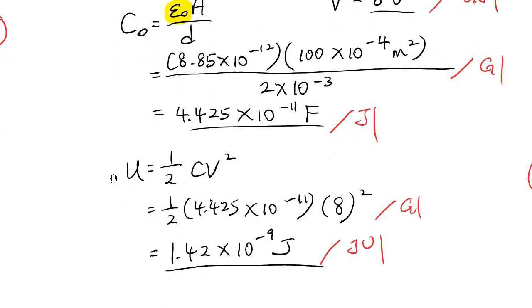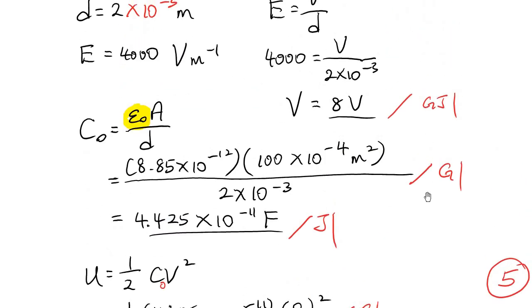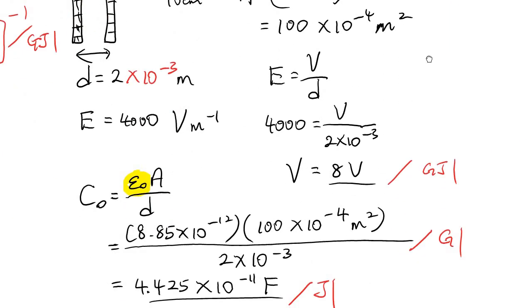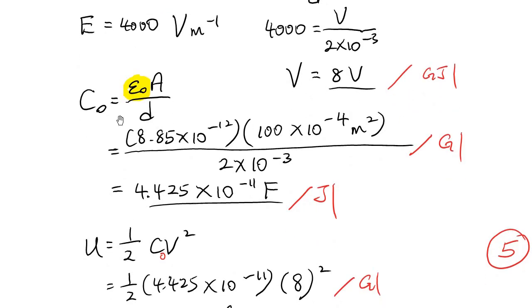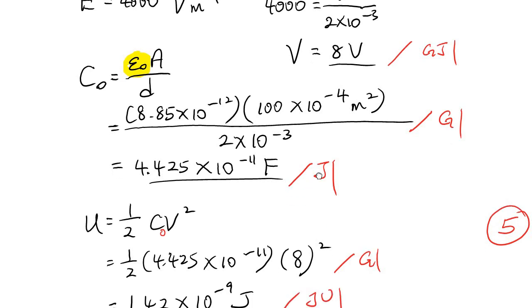And then the energy store. The formula is U equal to half CV square. So this is C naught. Because vacuum. No dielectric. Half CV square. And this is the answer. So this is the energy store. Here, voltage, you get one mark. Capacitor, the substitution, one mark. Answer, one mark. Finally, energy store. Substitution, one mark. Answer with unit one mark.